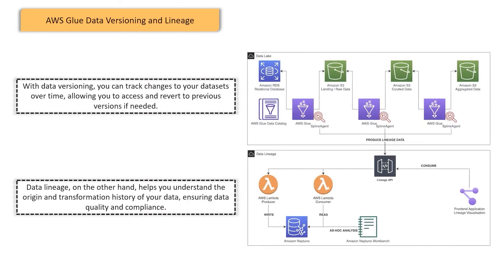AWS Glue also provides powerful data versioning and lineage capabilities. With data versioning, you can track changes to your datasets over time, allowing you to access and revert to previous versions if needed. Data lineage helps you understand the origin and transformation history of your data, ensuring data quality and compliance.